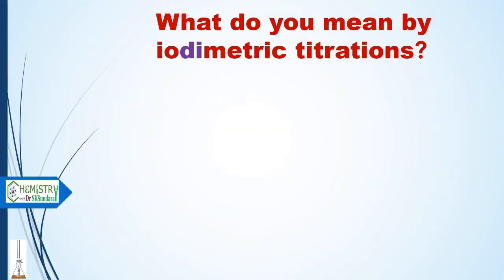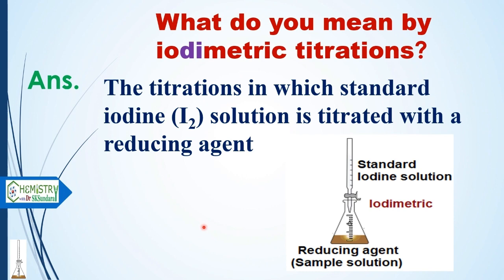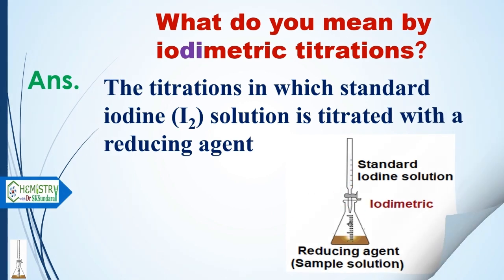What do you mean by iodimetric titrations? The titration in which a standard iodine solution is titrated directly with a reducing agent is known as iodimetric titration. That means you take the iodine solution and a reducing agent and perform a direct titration.